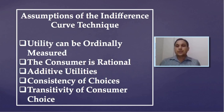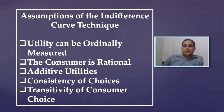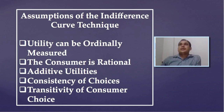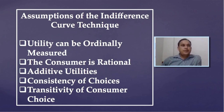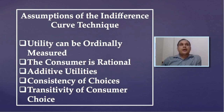The second assumption is that the consumer is rational. This is a common assumption for most theories in economics — the consumer is assumed to behave rationally. It implies that given their income and the prices of the two commodities, the consumer will always try to attain the highest level of satisfaction.